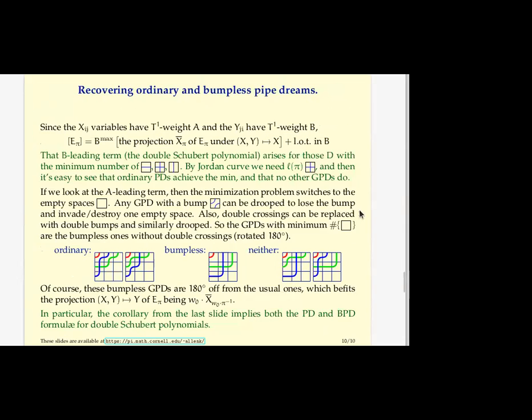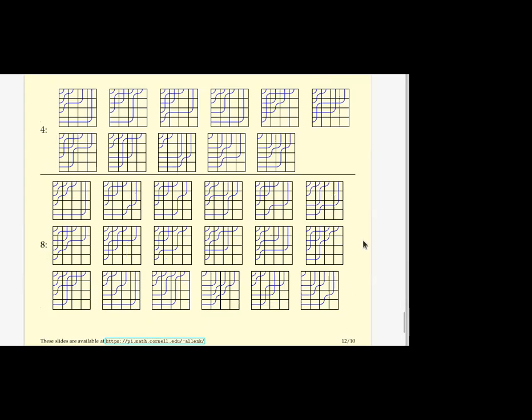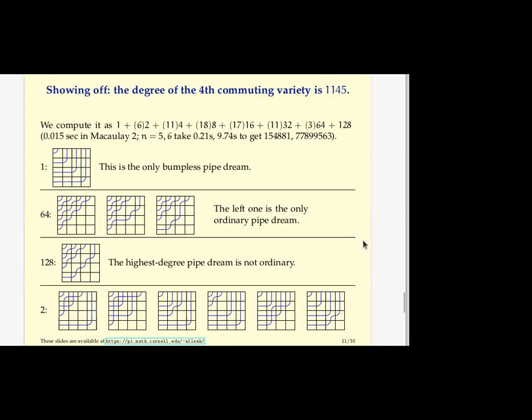So here's just me showing off that this combinatorial formula lets us compute these numbers like the degree of the fourth commuting variety by summing over these bumpless pipe dreams, each one contributing a power of two. Okay. Now I want to finally, I'm going to end with something ahistorical that I can't help but bring up.